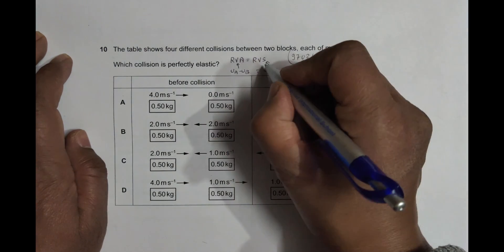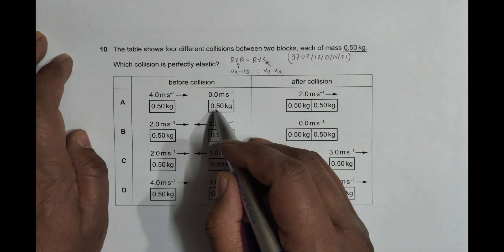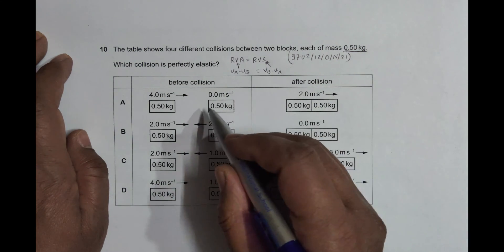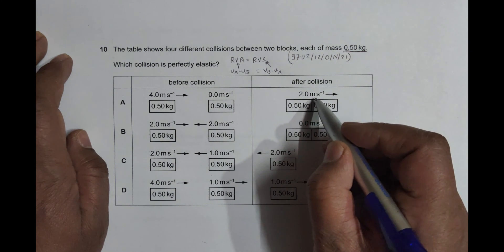So let's see whether they are equal in these options. In the first option, the two bodies are attached to each other after collision because both of them have the same velocity of 2. So in this case, v_b minus v_a will be equal to 2 minus 2, which equals 0.